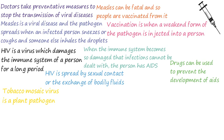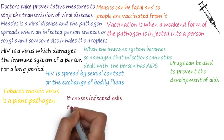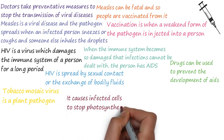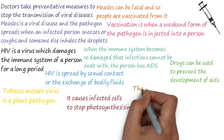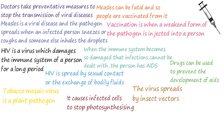Tobacco mosaic virus is a plant pathogen. The virus results in a distinctive mosaic pattern of discoloration on the leaves of the plant. The discoloration occurs because the infected cells do not photosynthesize. The virus spreads by insect vectors and infects many different plant types.